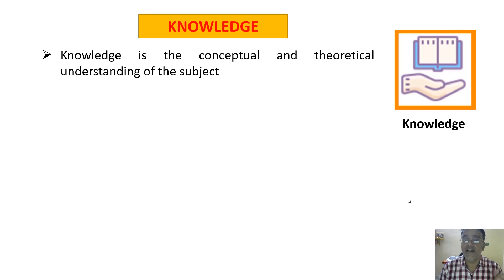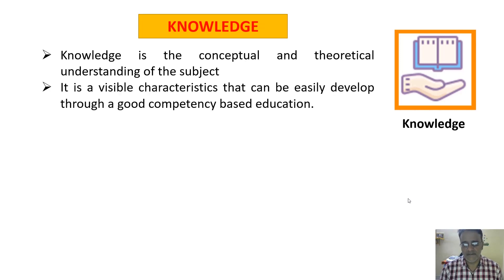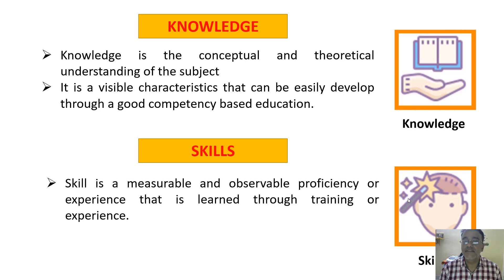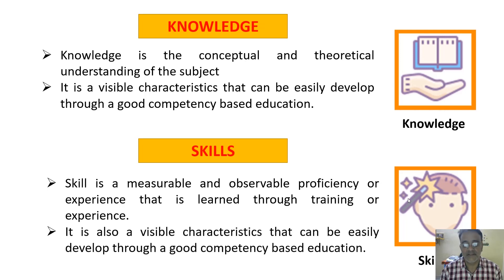Knowledge is a visible characteristic that can be easily developed through a good competency-based education. The next one is skills. Skill is a measurable and observable proficiency or experience that is learned through training or experience. It is also a visible characteristic that can be easily developed through a good competency-based education.